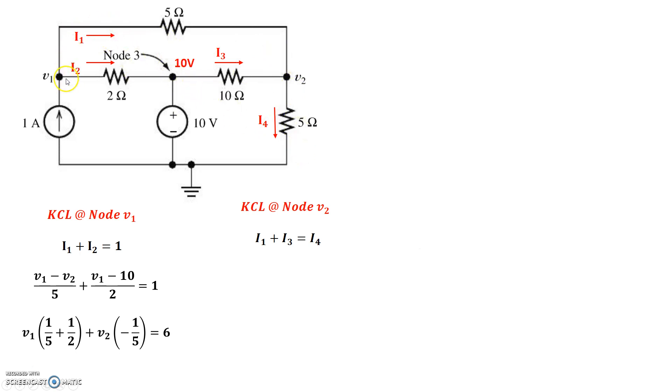Now I1 again starts at V1 and ends at V2 through the 5 ohm resistor. So we have V1 minus V2 divided by 5. I3 starts at 10 volts and ends at V2 through the 10 ohms. So it's 10 minus V2 divided by 10. And I4 starts at V2 and ends at the reference node. So V2 minus 0 divided by 5 or simply V2 over 5. Now again, what we'll do is we'll try to group V1 and V2 coefficients like this. And we end up with this.